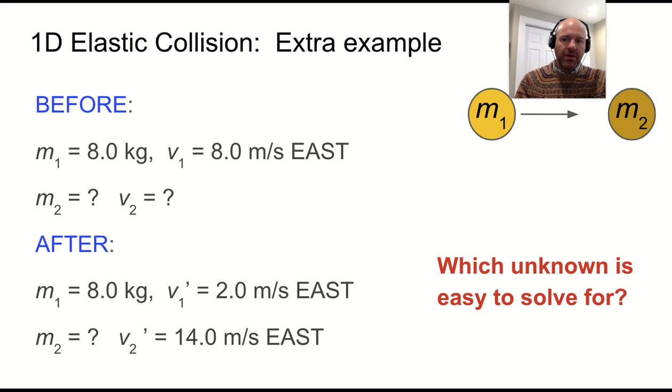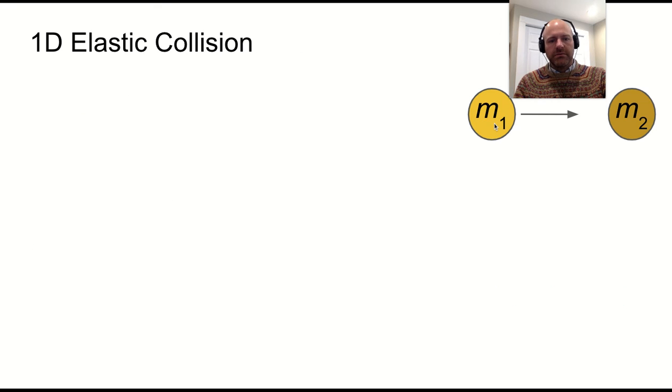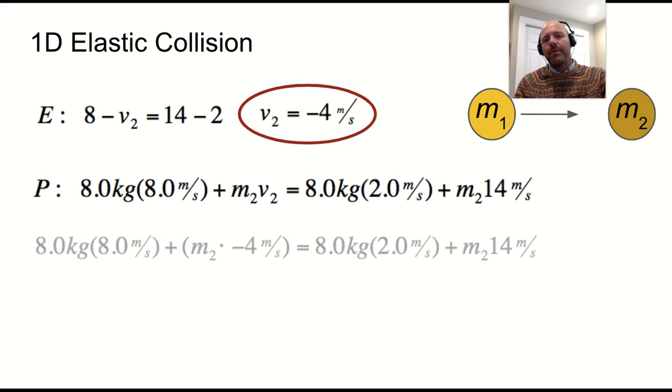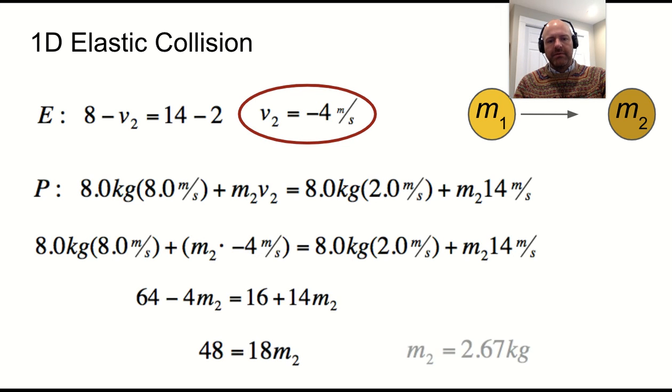Which unknown is the easiest to solve for? Well, if we do the energy equation, that allows us to solve for the velocity pretty quickly, one of them, V2. Then we can do the momentum equation, put everything together, and solve. You can go back and look at this example if you want in more detail.